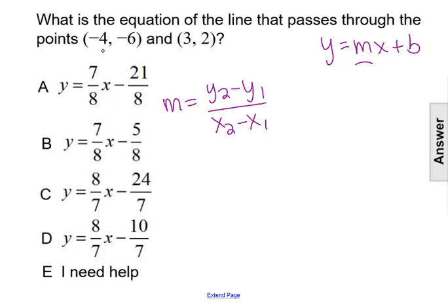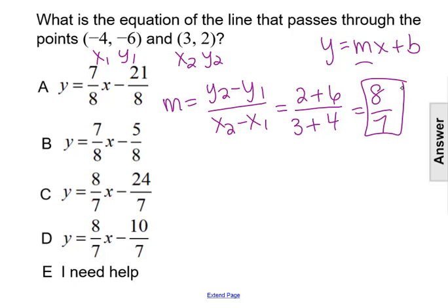That gives us values using the first point as x1 and y1, and the second point as x2 and y2. In our formula, that would be 2 minus negative 6, which is really 2 plus 6, and 3 minus negative 4, which is really 3 plus 4. So 2 plus 6 is 8, and 3 plus 4 is 7. So m equals 8 over 7. Our slope of that line is 8 over 7.